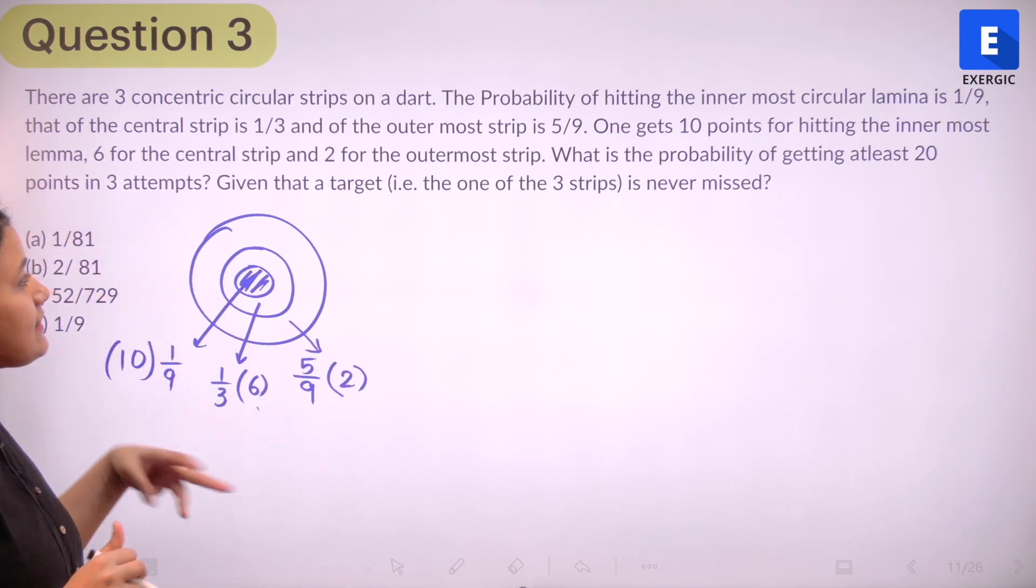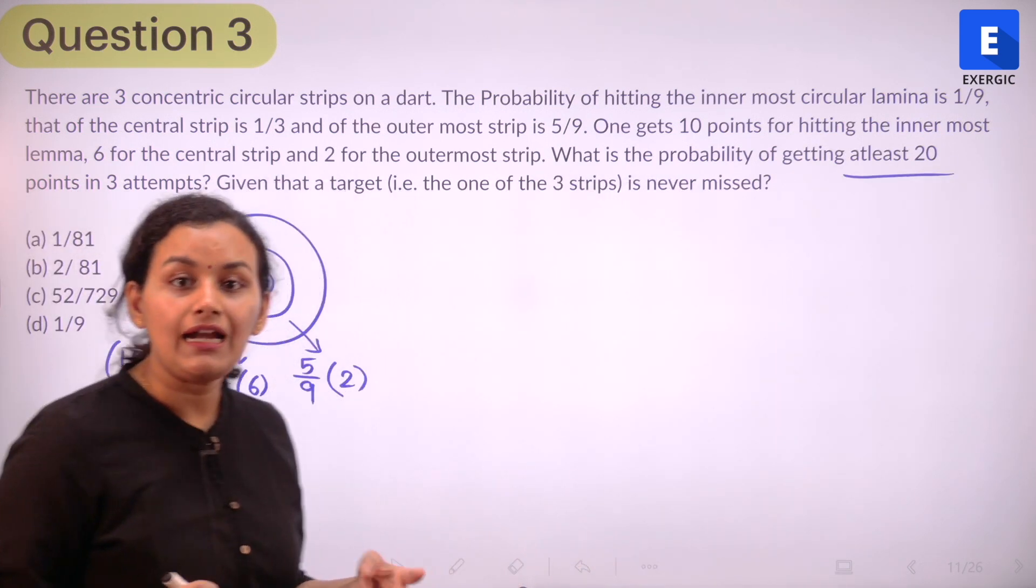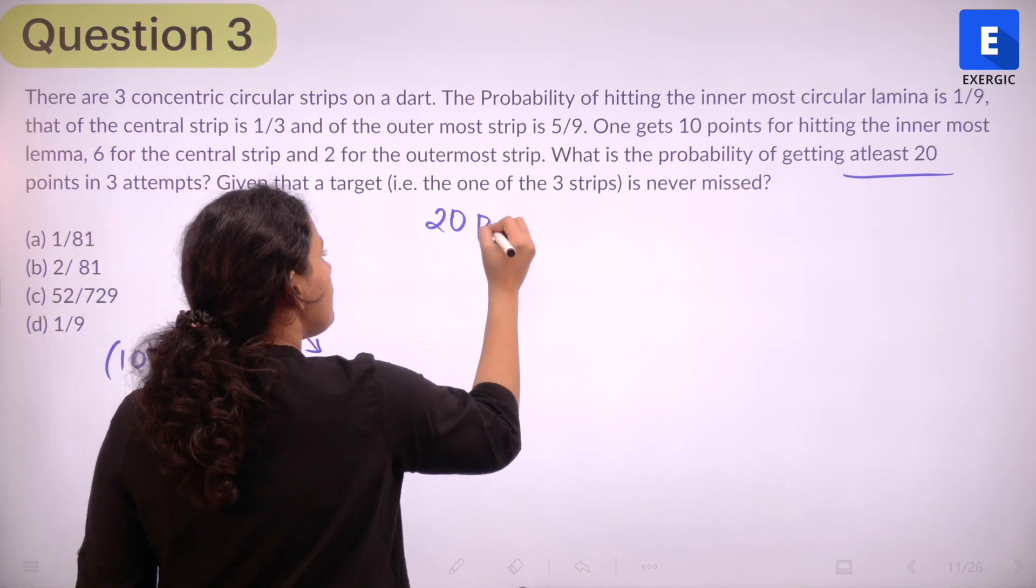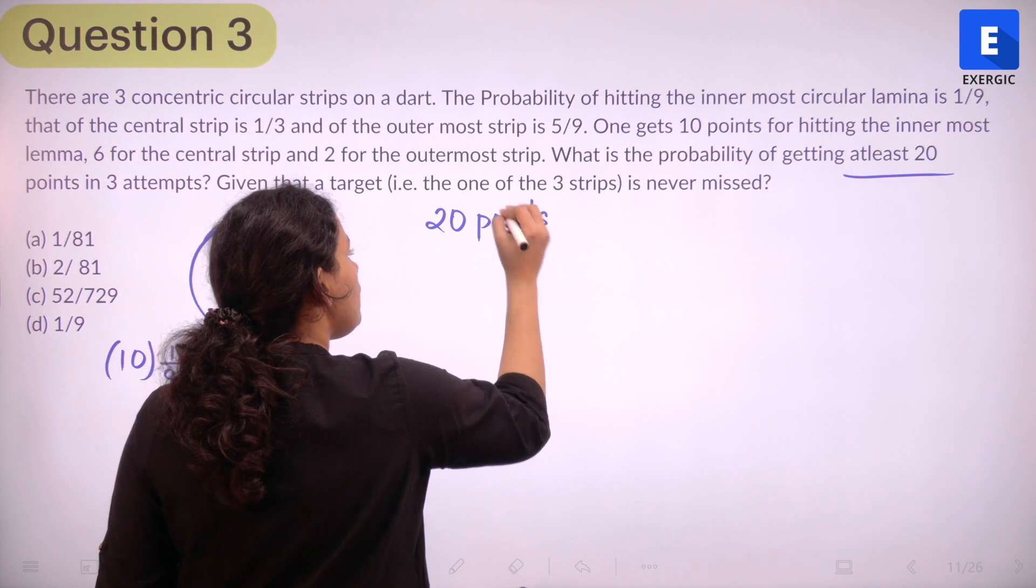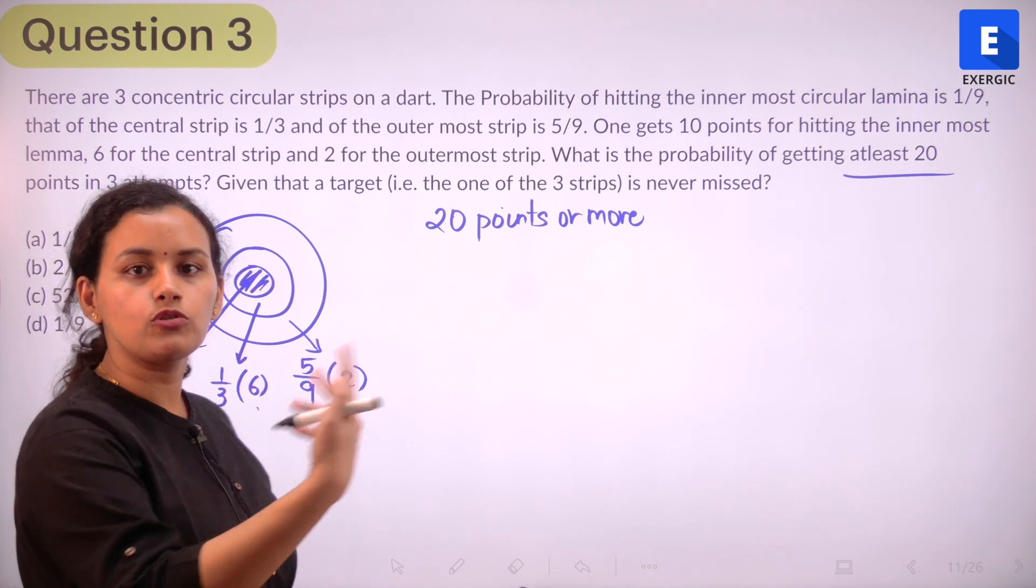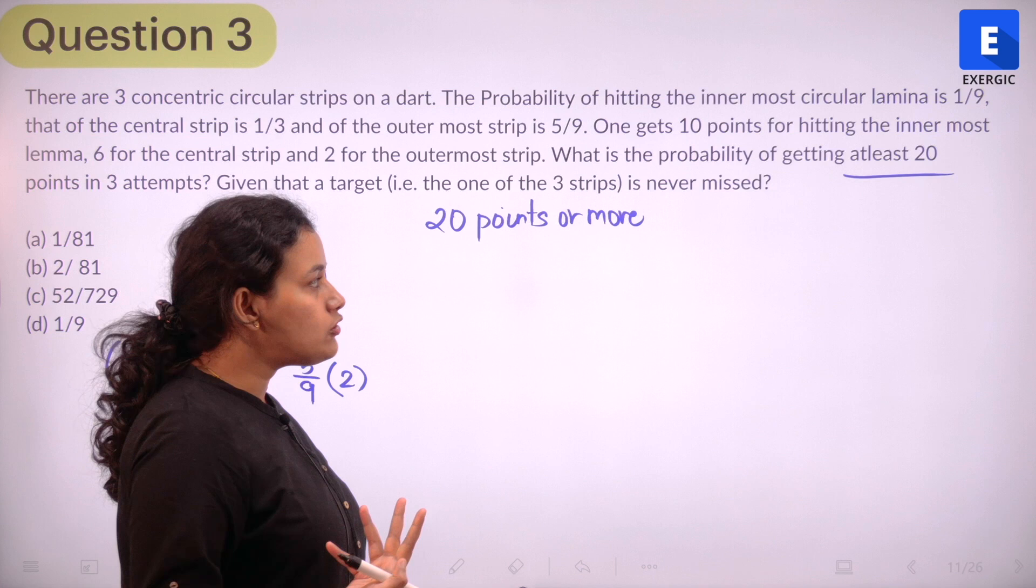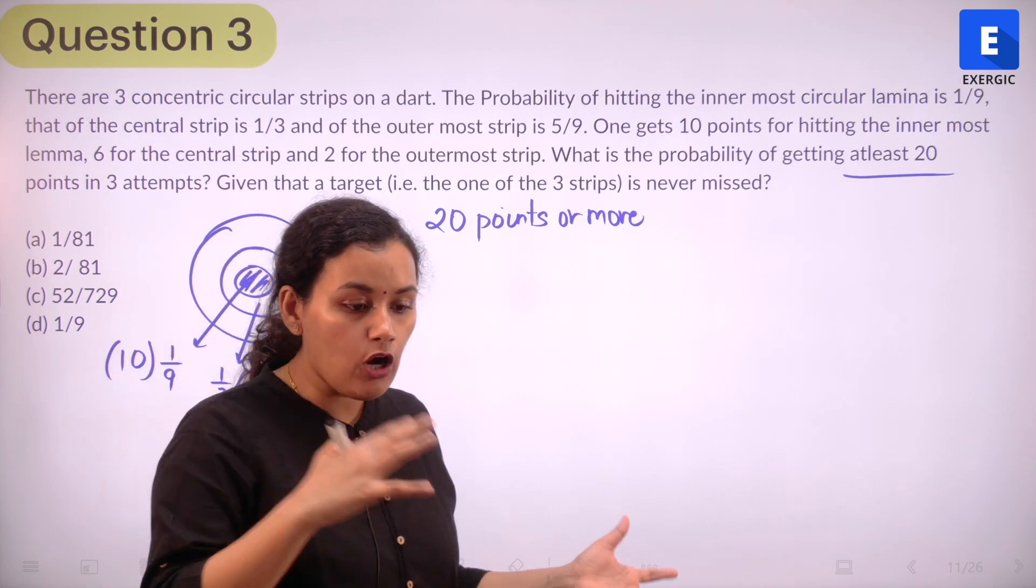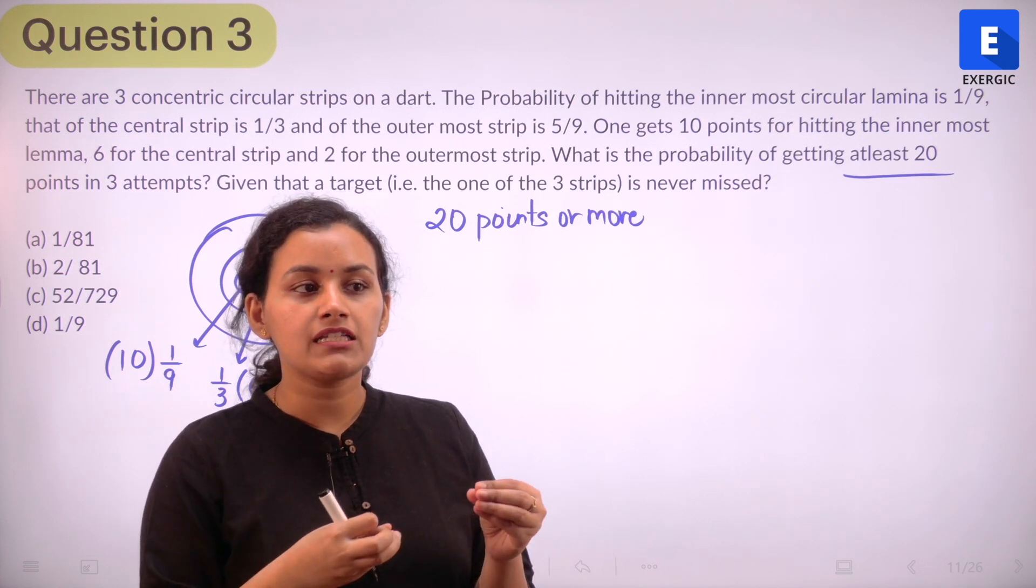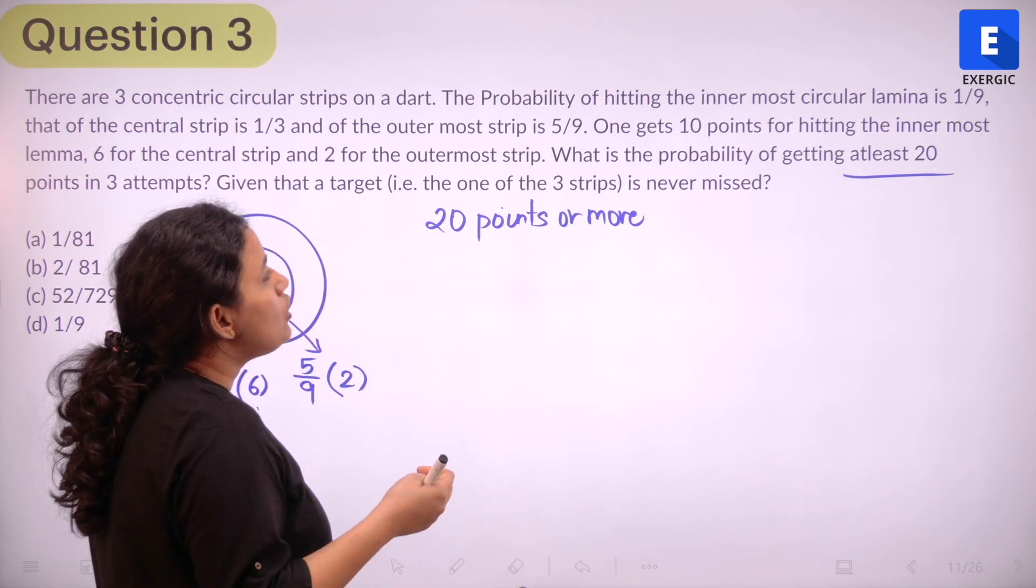Now they are saying that in three attempts, what is the probability of getting at least 20 points? At least 20 points means 20 points or more, right? 20 points or more. So 20, 21, 22, 23 and so on. So we need to find out first what are the various ways by which those points can be scored.